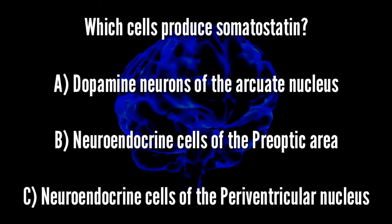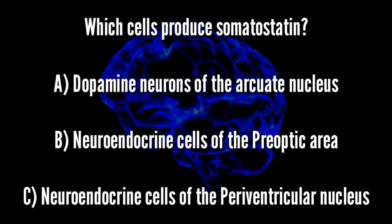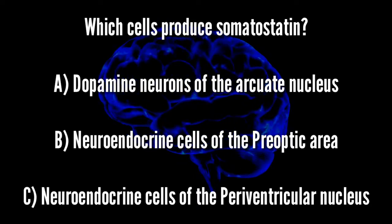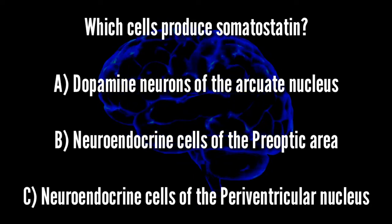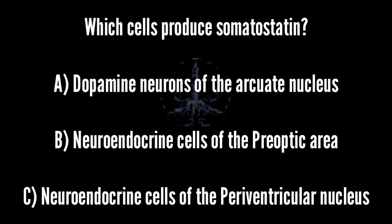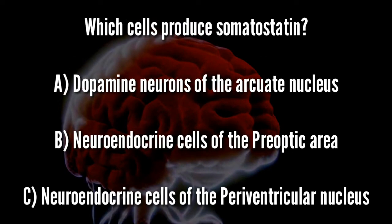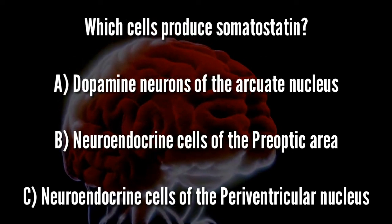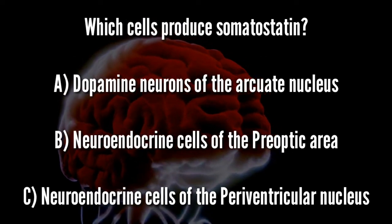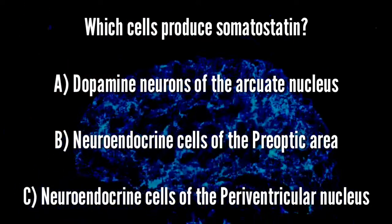Which cells produce somatostatin? A. Dopamine neurons of the arcuate nucleus. B. Neuroendocrine cells of the preoptic area. C. Neuroendocrine cells of the periventricular nucleus.